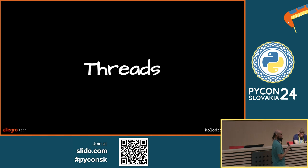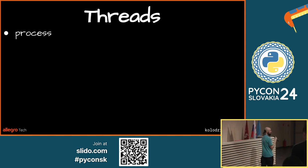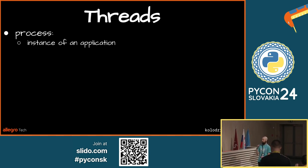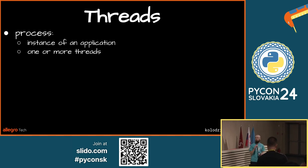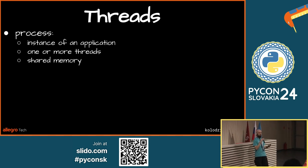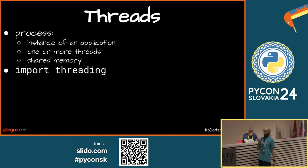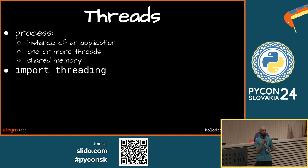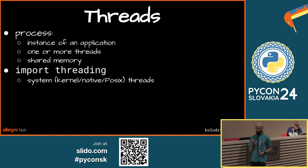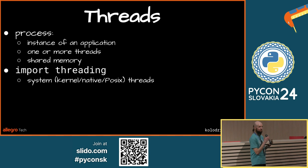What even are threads? A process in computer science is something that consists of one or more threads. It's an instance of an application with shared memory — all threads share the same memory space. In CPython specifically, when we talk about threads today, we're talking about the threading module, which uses system threads, also called kernel threads or native POSIX threads.